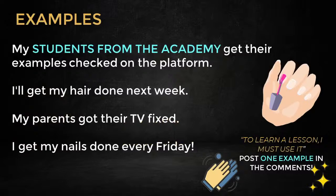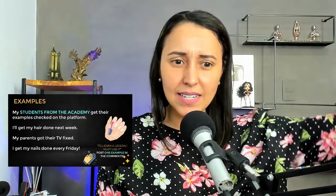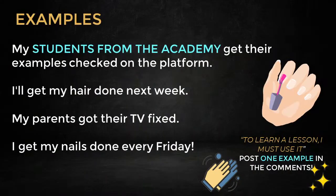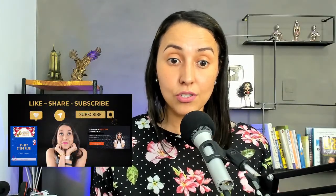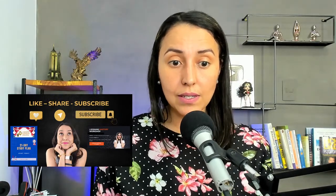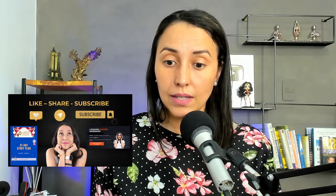My students from the Academy — my BSAs, baby sardines in the area — get their examples checked on the platform. So my students from the Academy get their examples checked on the platform. If they participate, they get corrections and comments. I love giving my students feedback. And remember: to learn a lesson, I must use it. I want you to post one example here in the comments — practice, study. It's very important. A few more examples: 'I will get my hair done next week.' 'My parents got their TV fixed.' 'I get my nails done every Friday.' These are good examples for you to use. This structure is common, but as I always teach my students, it's used in specific situations — that's very important.